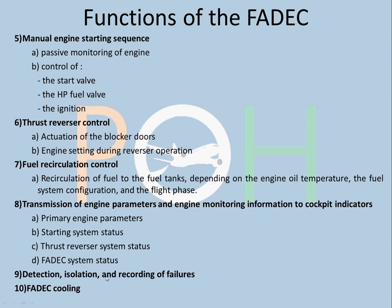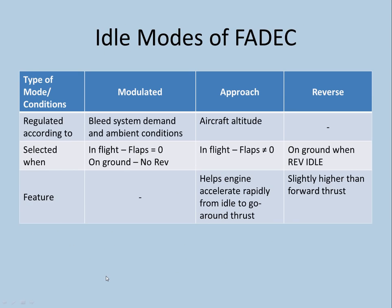FADEC also provides its own cooling. Now, idle modes of FADEC — there are three types: Modulated, Approach, and Reverse. Modulated idle is regulated according to bleed system demand and ambient conditions. If the bleed system demands more pneumatics, the modulated idle will be increased. This occurs in flight when flaps are at zero — clean configuration — and on the ground when no reversers are selected.